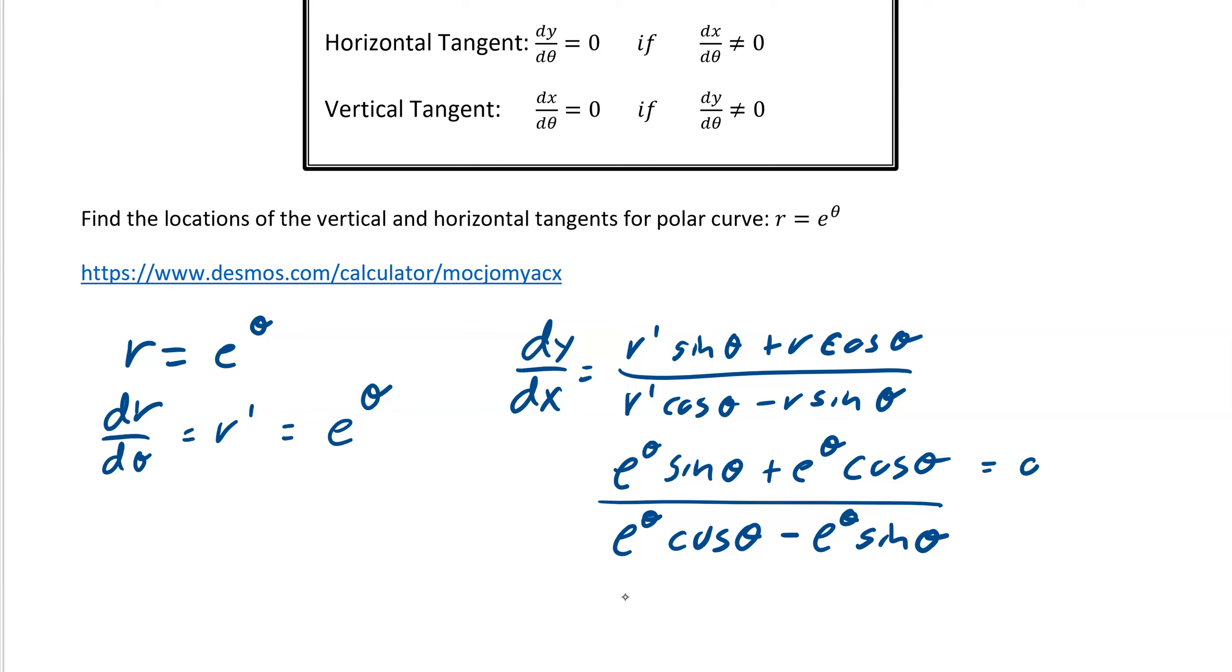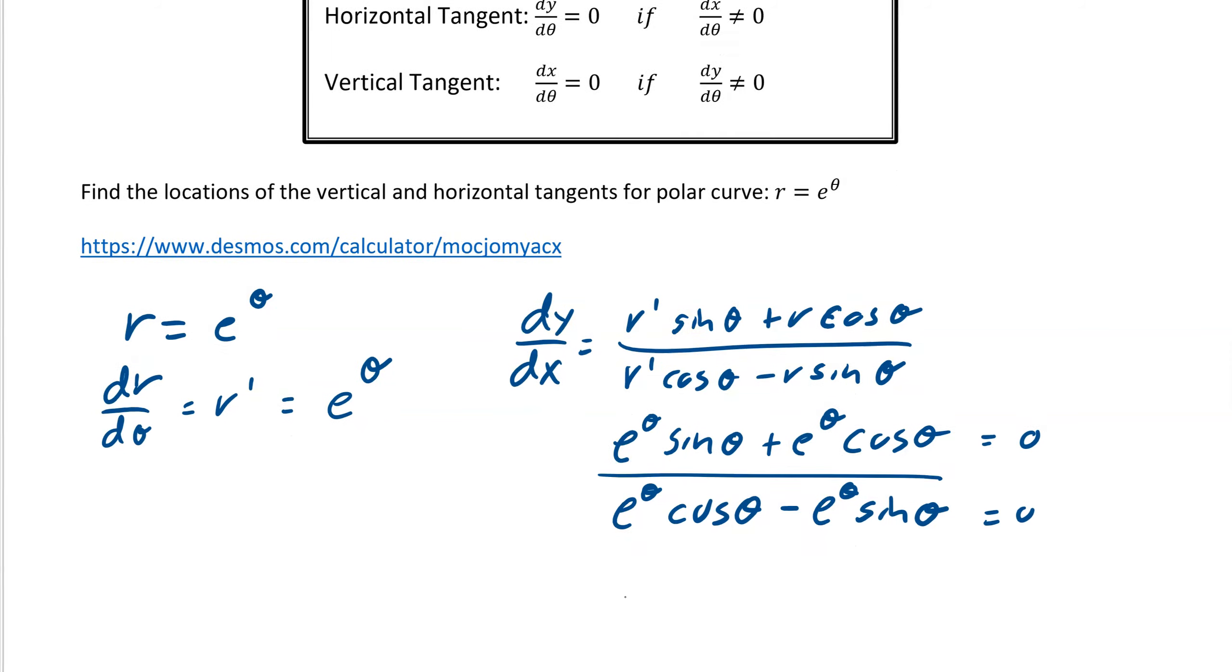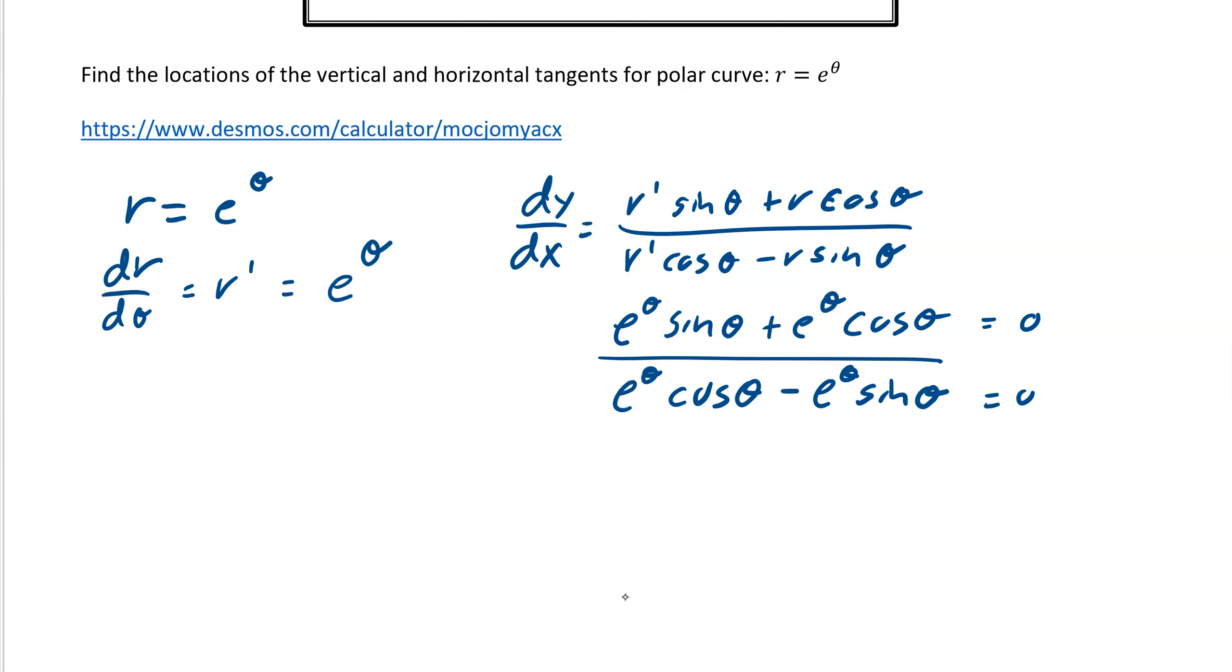All right, and then we're going to see what is this top equal and the bottom equal. So we need to factor the top and the bottom. So we can take out an e^θ, and we get sin θ plus cos θ. And then on the bottom, we do the same thing.